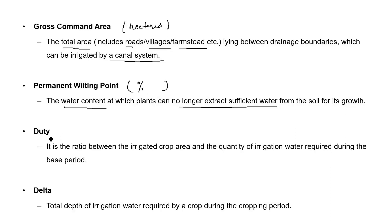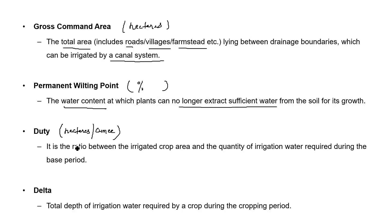The next parameter is duty. Duty is the total area which can be irrigated through one cumec of water. It is defined as the ratio between the irrigated crop area and the quantity of irrigation water required during the base period. The unit of crop duty is hectares per cumec — meaning from one cumec, how much area can be irrigated.